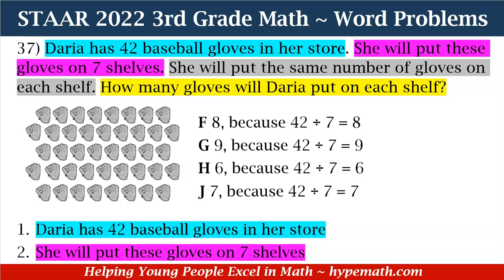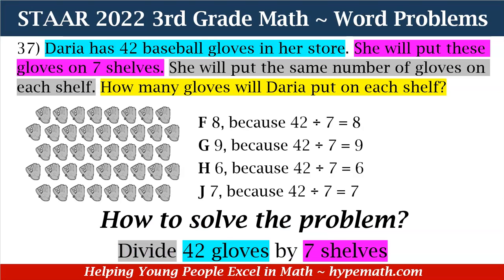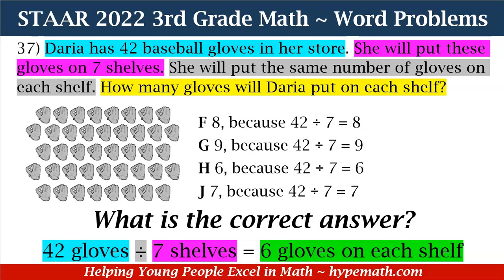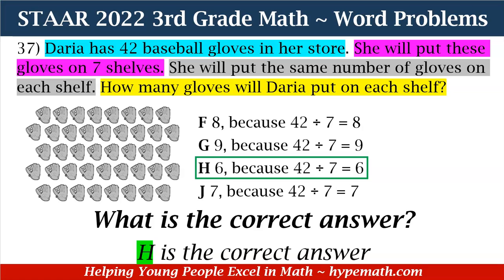Now that we know what we're looking for, how are we going to solve the problem? In order to discover how many gloves she will put on each shelf, we need to divide 42 gloves by 7 shelves. 42 divided by 7 is equal to 6, so there will be 6 gloves on each shelf. We need to look at our answer choices to see which one shows 6 as the answer because 42 divided by 7 is equal to 6. Yes, it is H. H is our correct answer.